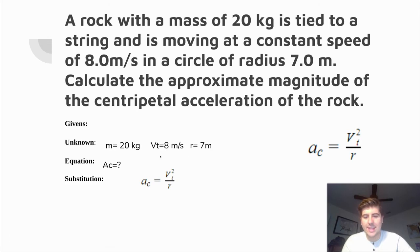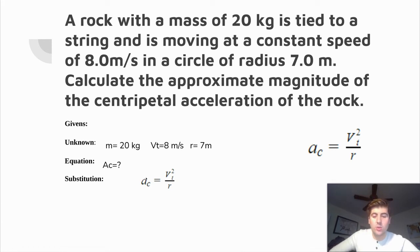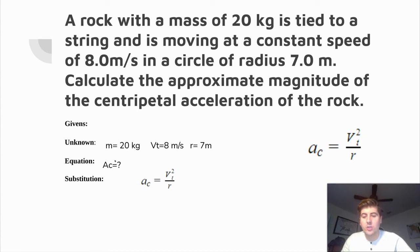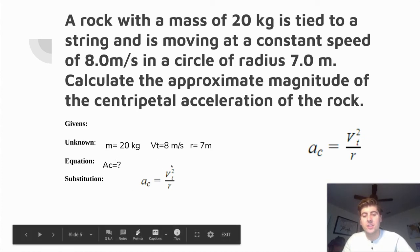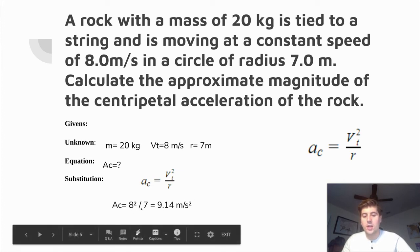We plug in everything we have. Notice we don't need the mass — sometimes problems give you more information than you need, and that mass doesn't fit into this equation, so we won't use it. Using tangential velocity and radius: 8 squared divided by 7 gives us a centripetal acceleration of 9.14 meters per second squared.